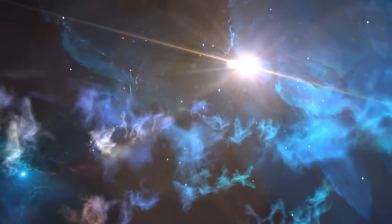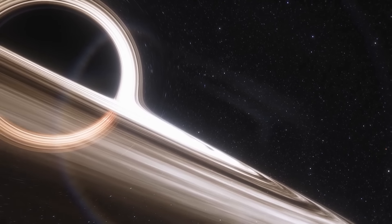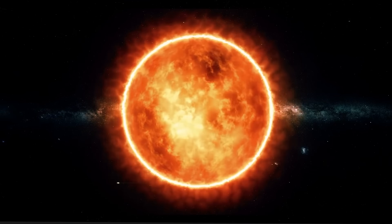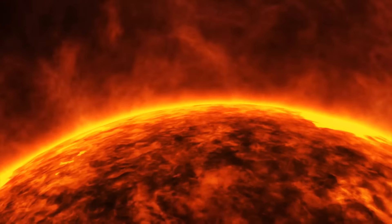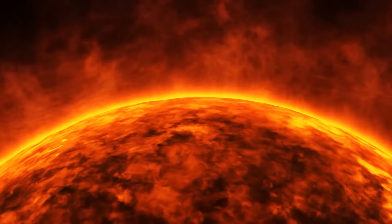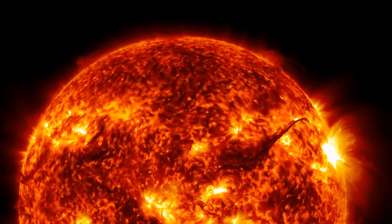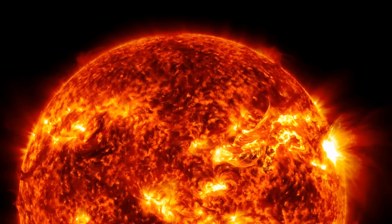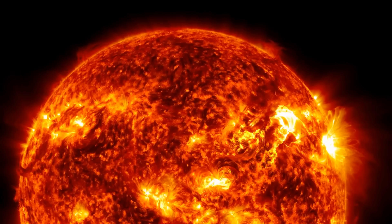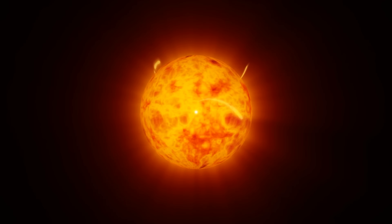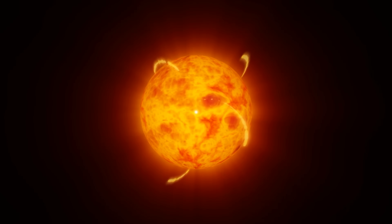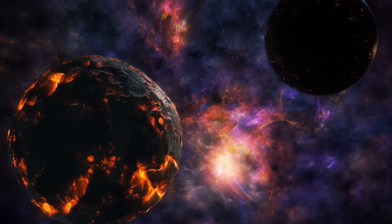The future of Betelgeuse, like that of all red supergiants, leads to an explosive conclusion as a supernova. This event will represent the pinnacle of its life cycle, leaving behind either a neutron star or a black hole. In the red supergiant phase, Betelgeuse continues nuclear fusion in its core, now converting heavier elements like carbon and oxygen. Each fusion phase is shorter than the previous one, culminating in the final stages where iron forms in the core.